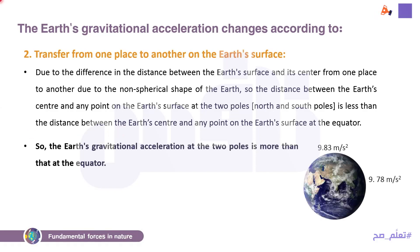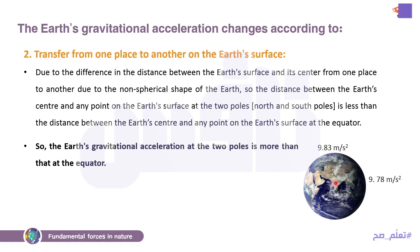بص اهي الearth: distance d عند الpoles مش equal الdistance عند الequator. اللي أقل هي عند two poles — يعني انت لو واقف عند two poles هتبقى أقرب للcenter، فالearth تأثر على الobject أكتر، فالweight هنا هيبقى أكبر. لكن عند الإكواتور distance أكبر فالacceleration هتكون أقل والweight هيكون أقل — هنا 9.78 m/s². So the earth's gravitational acceleration at the two poles is more than that at the equator، وبالتالي الweight بتاعك عند the two poles هيبقى more.